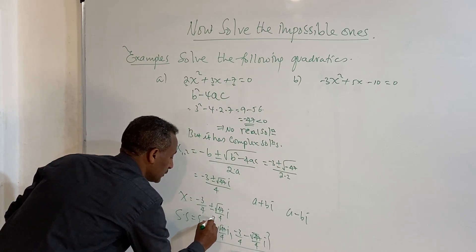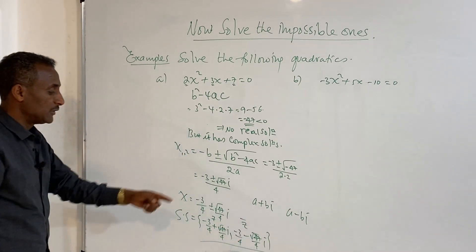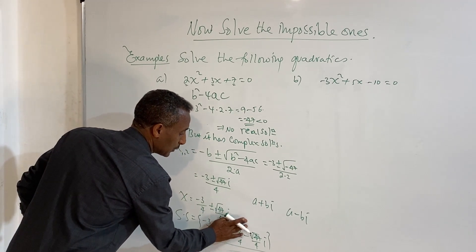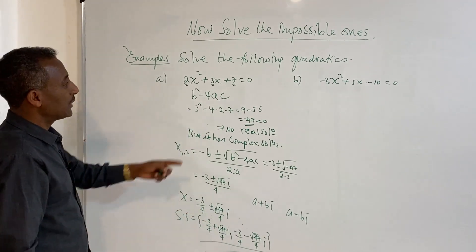It is z and z bar, the complex number and its conjugate. This is solution 1 and solution 2. Actually, let's do the second one.